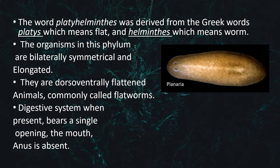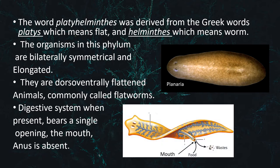Regarding the digestive system, when present, it has a single opening — the mouth — and the anus is absent. Here you can see the location of the mouth in this worm. It takes in food and also expels wastes, acting as an anus.